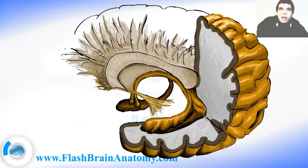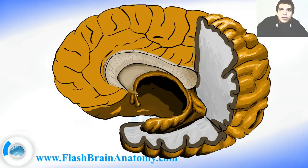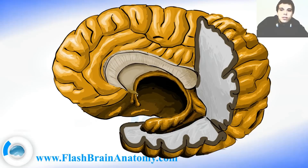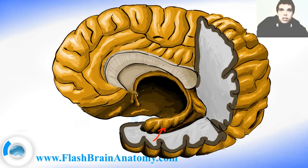Then I illustrated the right hemisphere with the cingulate sulcus and the cingulate gyrus. Here we can see many parts of the limbic system — for example, the hippocampus, the septum pellucidum, the fornix. And according to Terminologia Anatomica, the international standard on human anatomic terminology, the cingulate sulcus and cingulate gyrus also count as part of the limbic system. They are part of the limbic cortex.